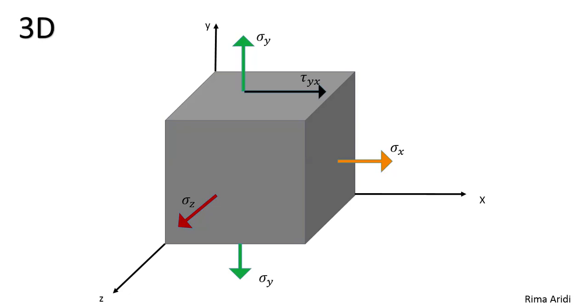Now, tau, which is the shear stress, has two subscripts. The first one denotes the face on which the stress acts. The second gives the direction on that face. For example, here, Y denotes the face on which the stress acts, and X is the direction of this face.